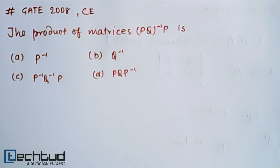This was a GATE question asked in 2008. The question is: the product of matrices (PQ)^(-1)P is.